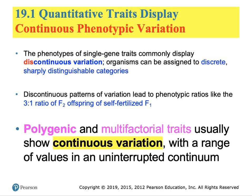What else exists in the natural world? Genes fall into two other containers: one is a polygenic system, and the second is a multifactorial trait system. Both of these show continuous variation with a range of values.